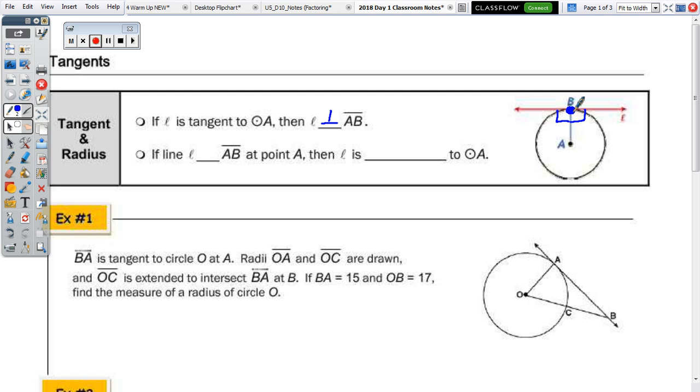So, tangent line intersects the circle once, whereas secant intersects the circle twice. If you're told that line L is perpendicular, then you can conclude that it's a tangent line.